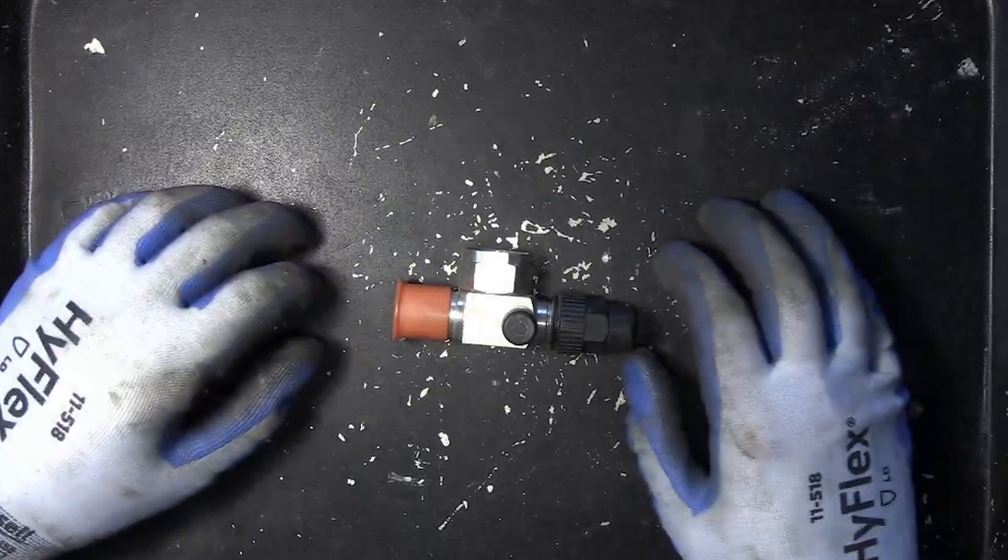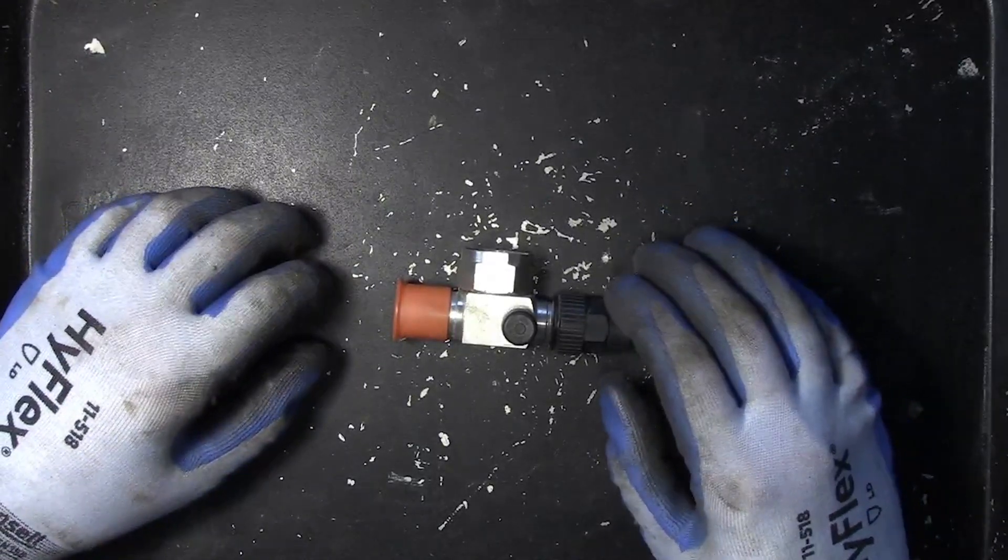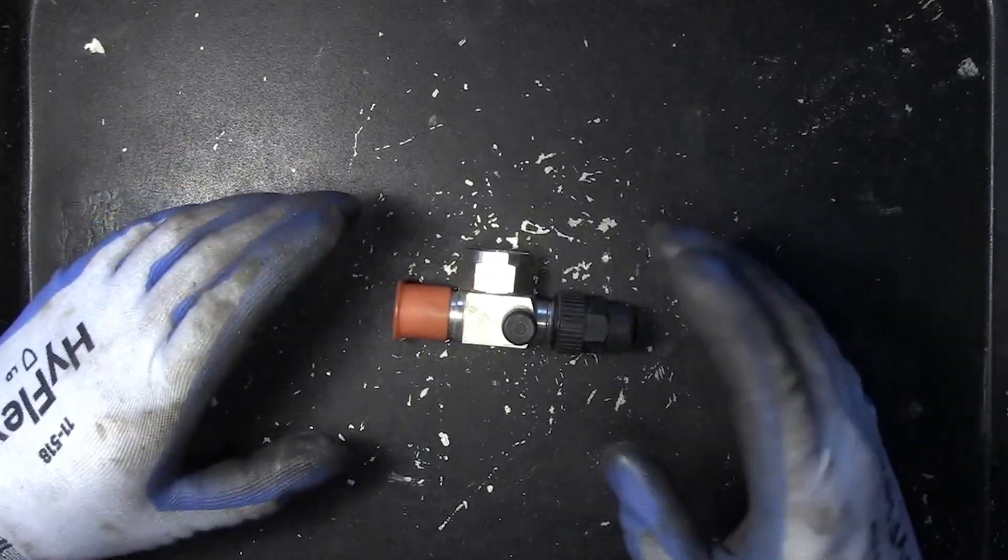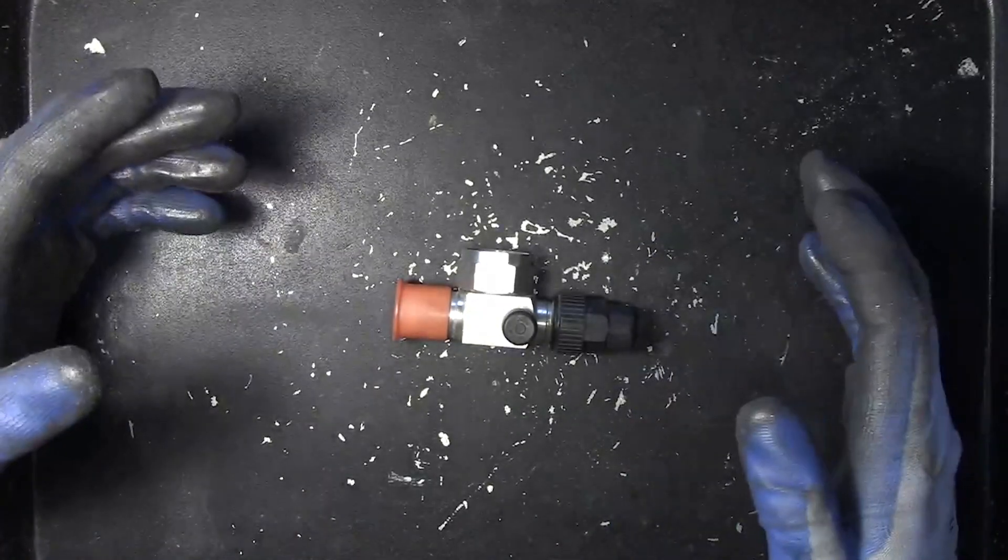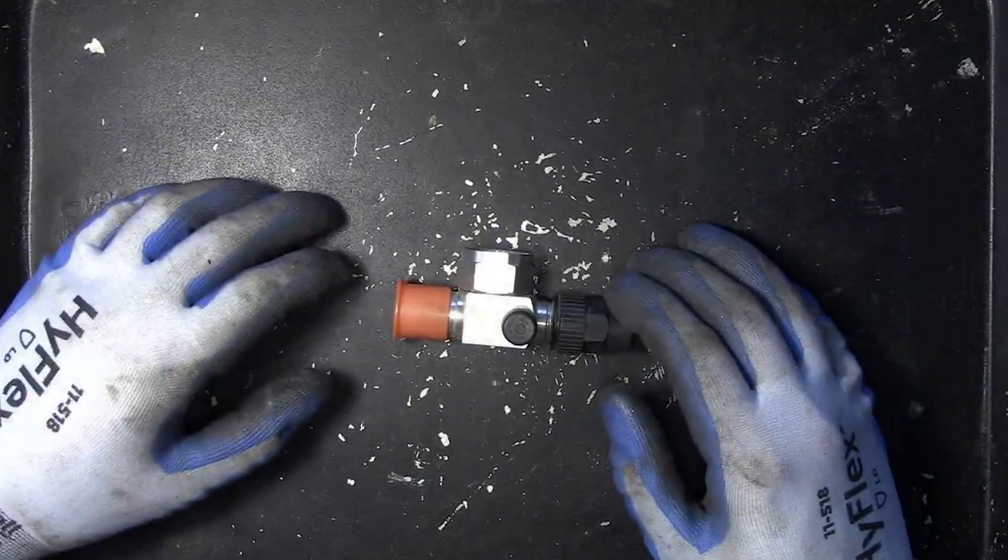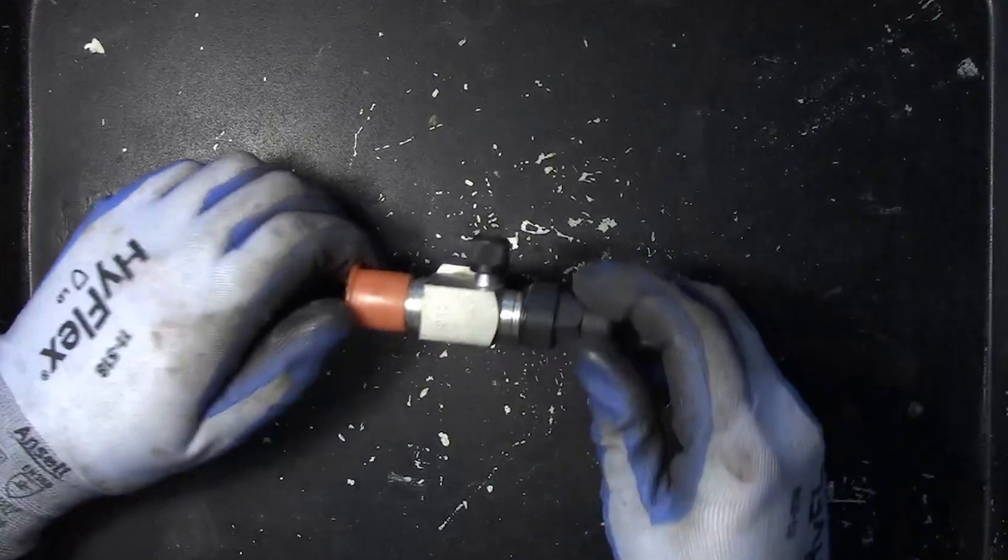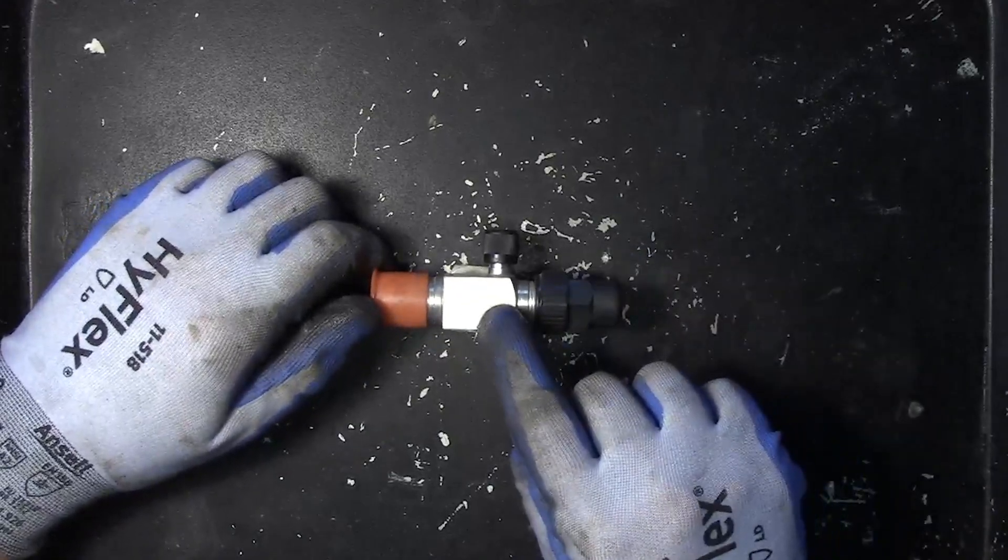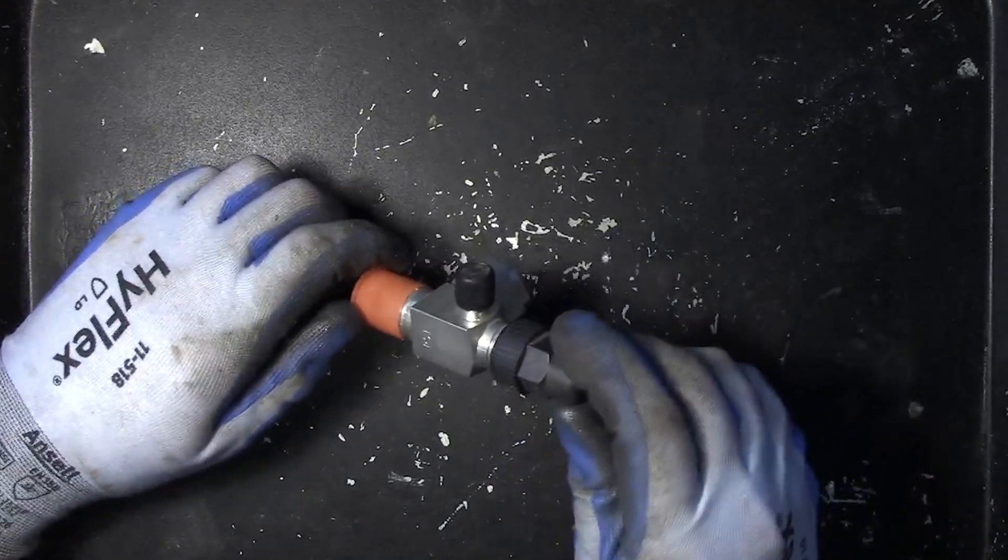Hi folks, welcome back to another episode of Teardown Tuesday. Today we're taking a look at a very common component in a refrigeration system, especially in larger systems, and that's a service valve or an isolation valve, sometimes called a king valve.